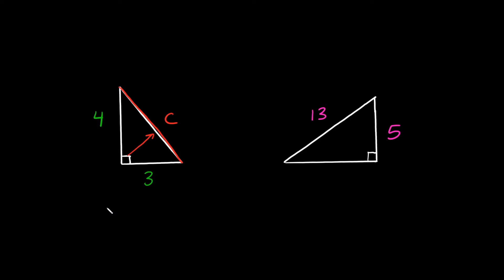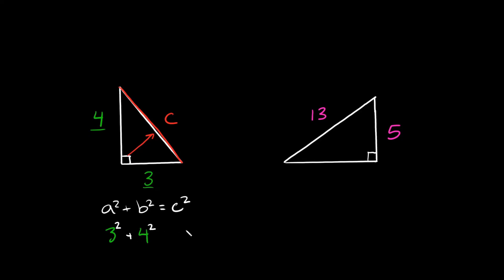Remember, the formula was A squared plus B squared is equal to C squared. Now we know that three and four are the sides — they're A and B. It doesn't matter which one you list as A and which one you list as B. So let's say three is A and four is B. Then we just have to square each of them and add them together, setting that equal to C squared.